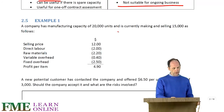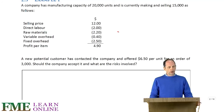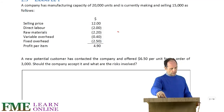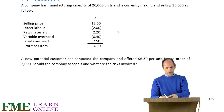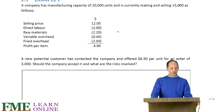Let me show you what I mean with Example 1. A company has capacity of 20,000 units and is already making and selling 15,000, so they have spare capacity of 5,000. There is information for each item they make: selling price, direct labour, raw materials, variable overhead, fixed overhead, and profit per item.